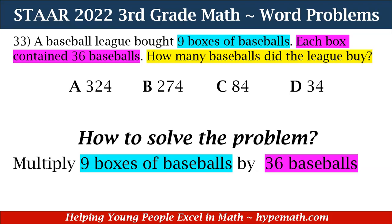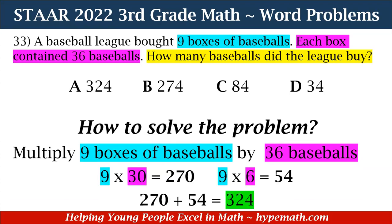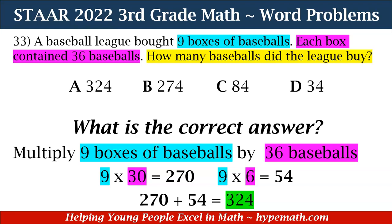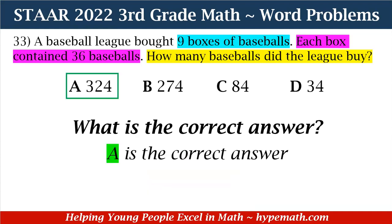We are going to multiply nine boxes of baseballs by 36 baseballs. Nine times 30 is equal to 270, and nine times six is equal to 54. When we add those two numbers together, 270 plus 54 is equal to 324. Looking at our answer choices, the answer of 324 is answer A. That is our correct answer. Great job, third graders.